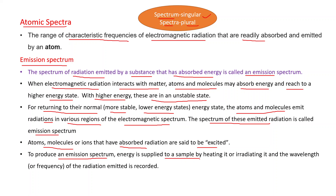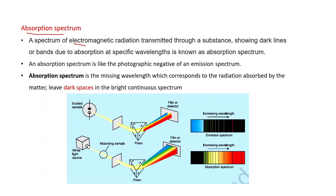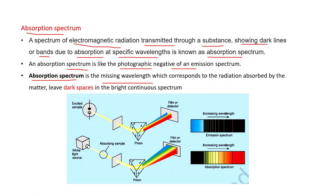To produce an emission spectrum, energy is supplied to a sample by heating or irradiation, and the wavelengths or frequencies of emitted radiation are recorded. Absorption spectrum: the spectrum obtained from transmitted light showing dark lines or bands due to absorption at specific wavelengths. The absorption spectrum is like the photographic negative of an emission spectrum — whatever appears white in the negative is black in the positive, so they are complementary to each other.